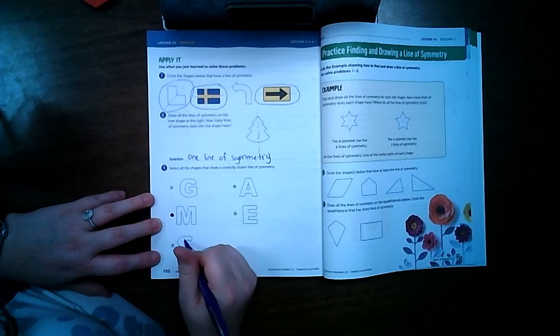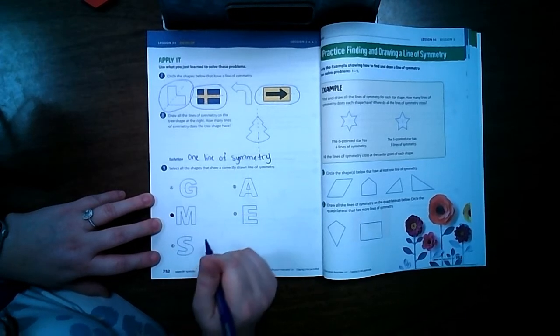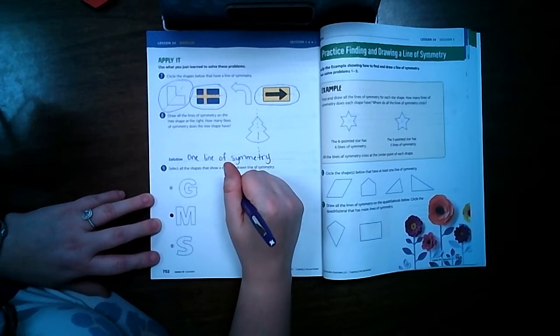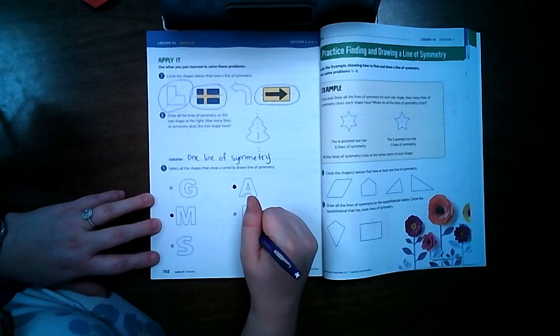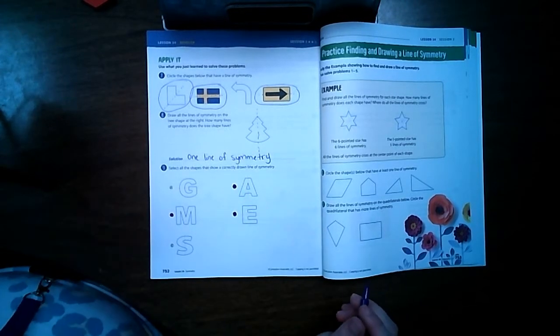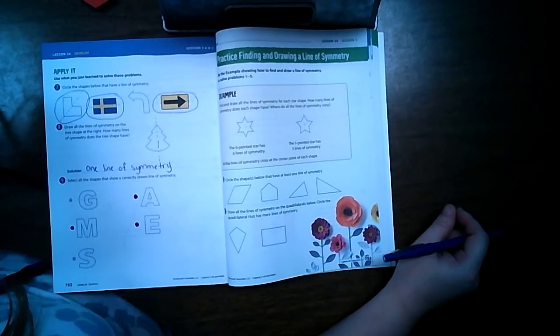The M, if I fold it over it would fold over exactly. The S, if I fold this line over it's going to be over here on this hump so that one wouldn't work. The A, if I fold that over it would fold over exactly. And the E, if I fold it in half then yes it would fold exactly.